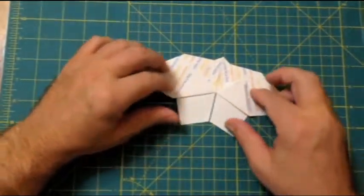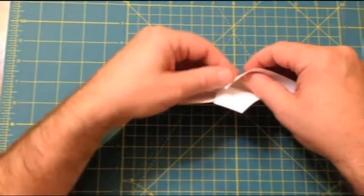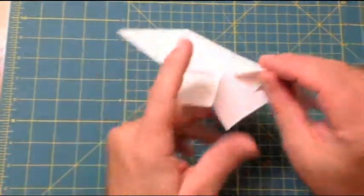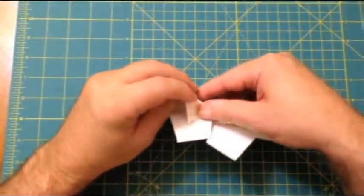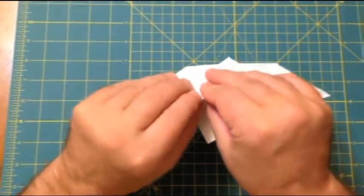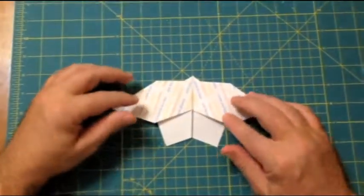And now what we do is we fold this underneath. We invert the fold. Fold it underneath. And again, over here. There we go. Looks nice.